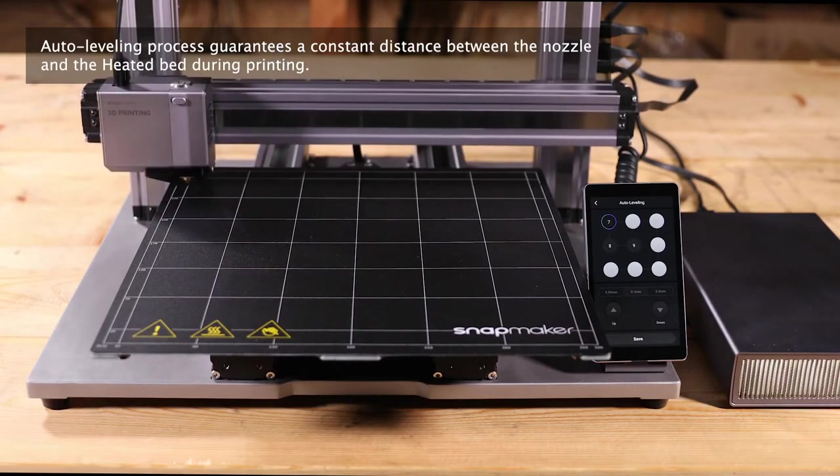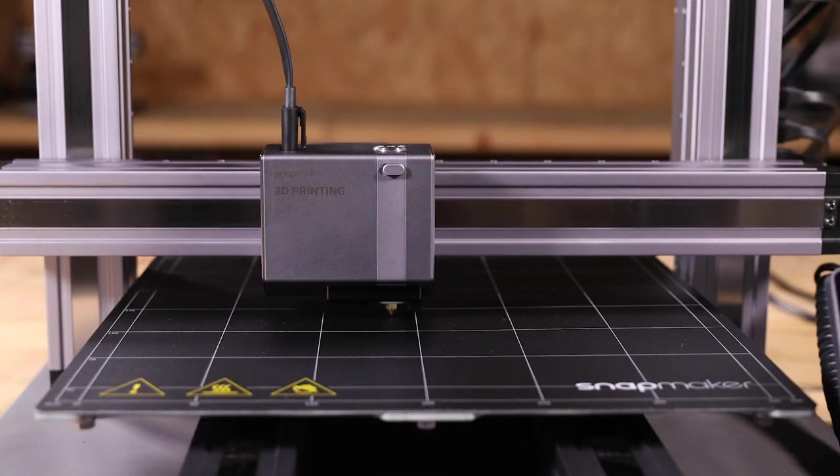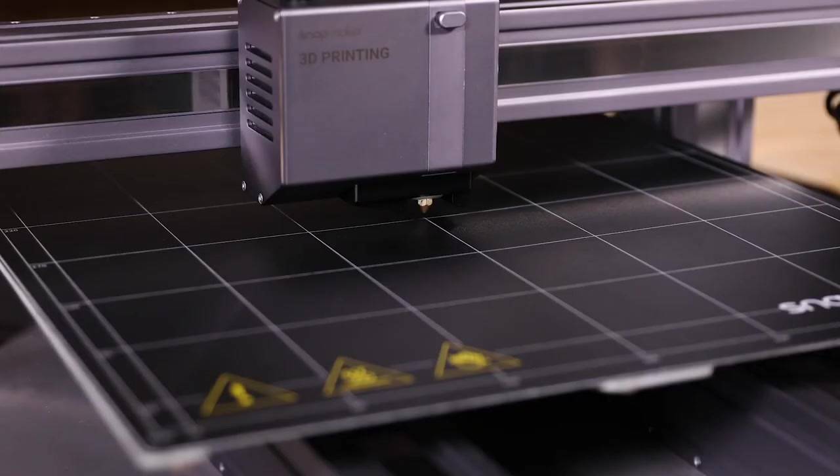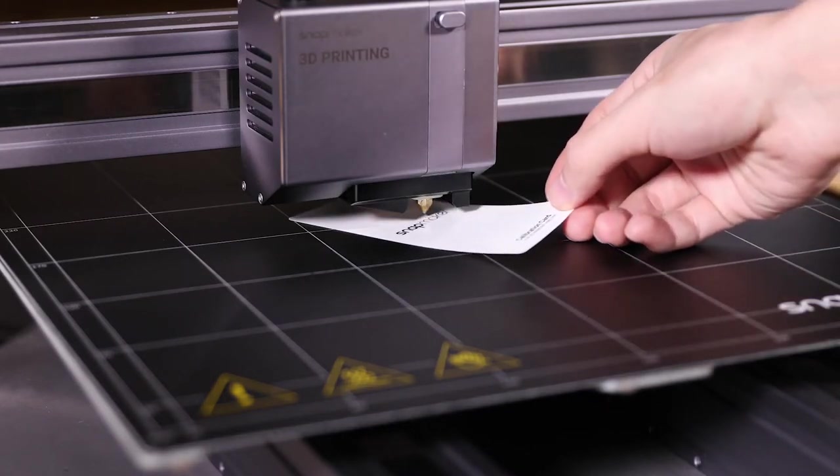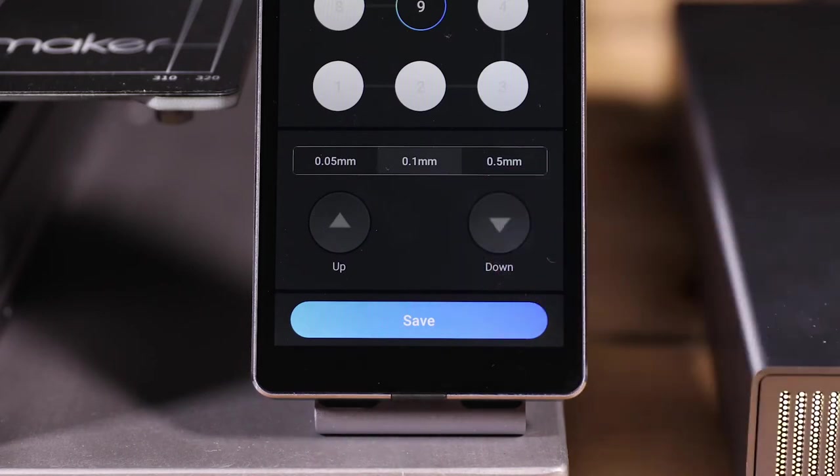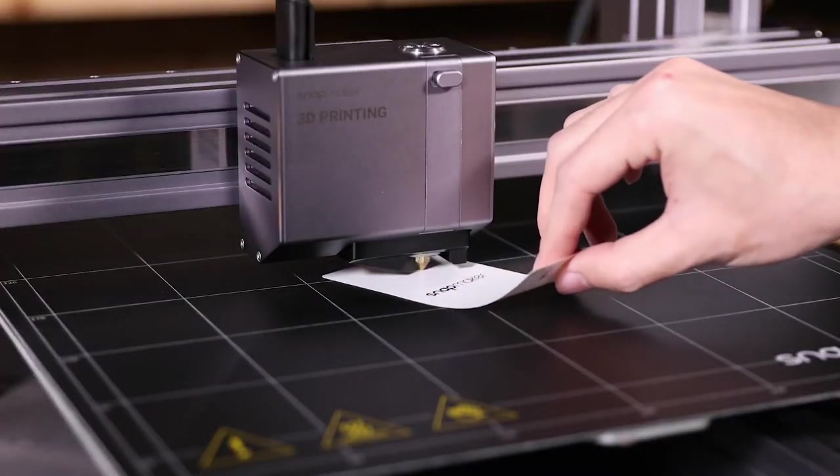Now, the 3D printing module will probe the bed in a grid. When the 3D printing module finally moves to and hovers over the center of the heated bed, set a proper Z offset as instructed. Take out the calibration card A4 paper and place it under the nozzle. Tap the up and down buttons to fine-tune the Z offset until you feel a slight resistance when pulling the paper, and see a curl when pushing forward.